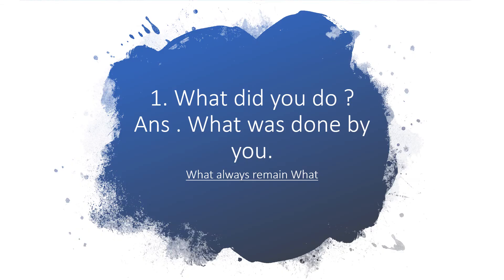One important rule pertaining to 'what': if there is a 'what' in the sentence, you will transform the sentence without changing the first word — what always remains what. 'What did you do?' becomes 'What was done by you?' So 'what' stays as 'what', 'did' changes to 'was', giving us 'What was done by you?' — and 'you' remains 'you'.